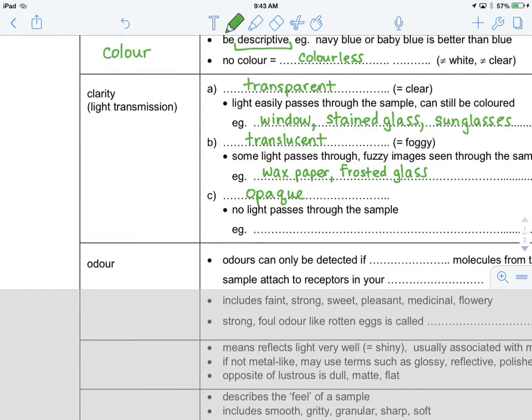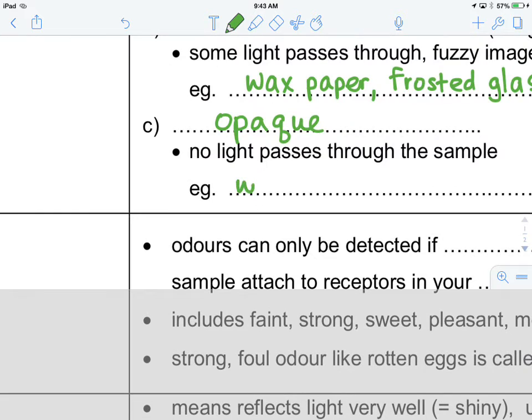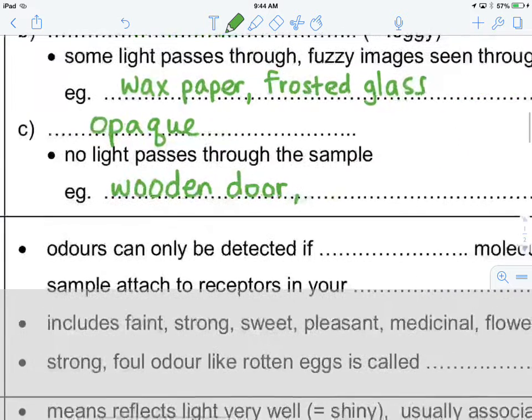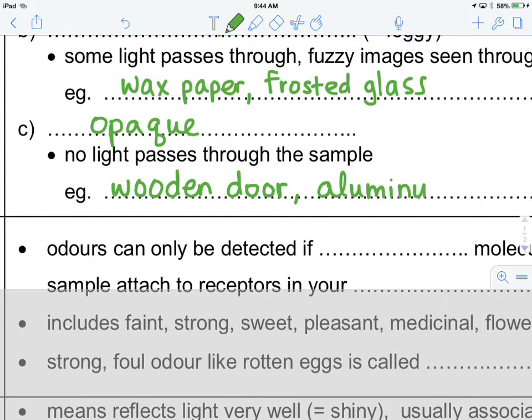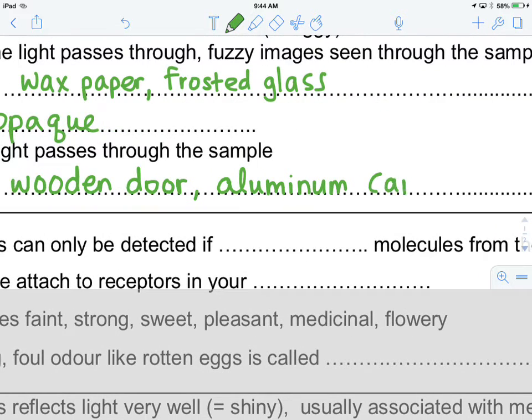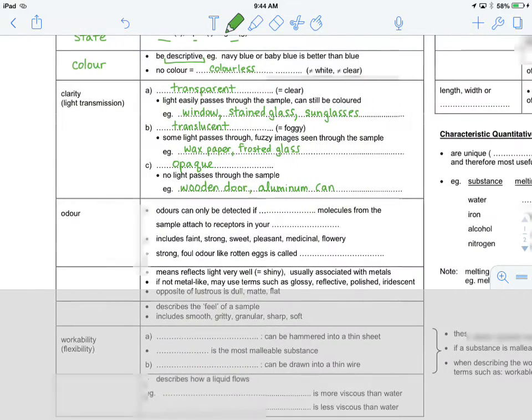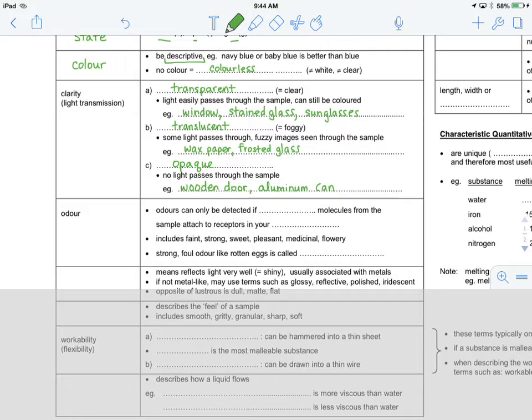No light passes through the sample. And so this would be something like a wooden door or alternatively, an aluminum can. No light gets through these objects. So, again, just to rehash, clarity means how easily light is transmitted, and we have three modes, transparent, translucent, and opaque.